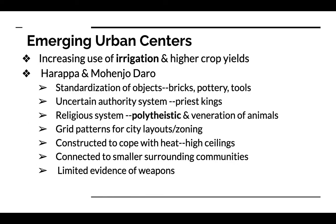The Indus Valley civilization also has emerging urban centers — the beginnings of cities that can support thousands and thousands of people. One explanation for how they achieved this is the increasing use of irrigation: the capturing and directing of water for the purpose of growing crops. Once you can irrigate and get water to your plants, you can have higher crop yields, grow more food, more calories, which means more people. The two big city-states of the Indus Valley civilization are called Harappa and Mohenjo-Daro.